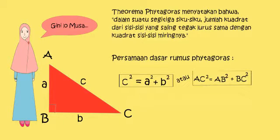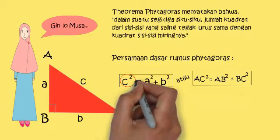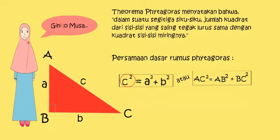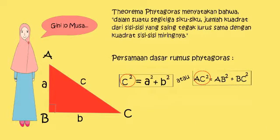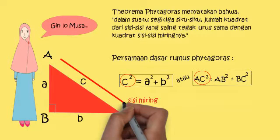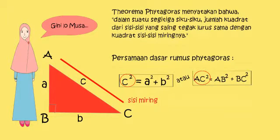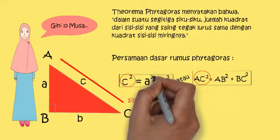Perhatikan baik-baik. C kuadrat dan AC kuadrat merupakan sisi miring dari segitiga. Perhatikan garis berwarna merah ini. Garis ini menunjukkan sisi miring dari segitiga.